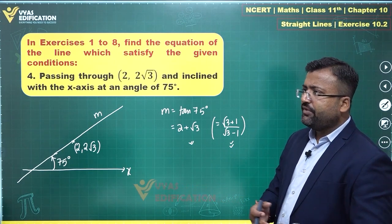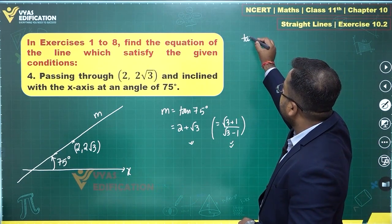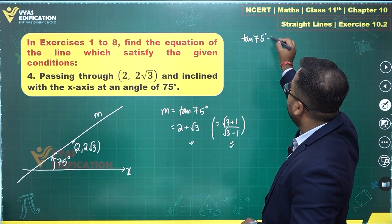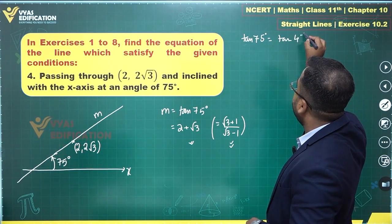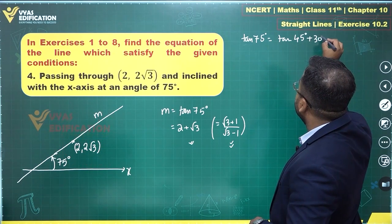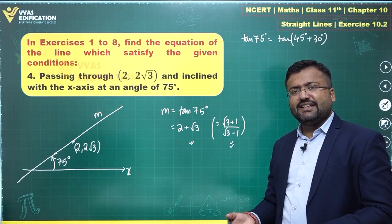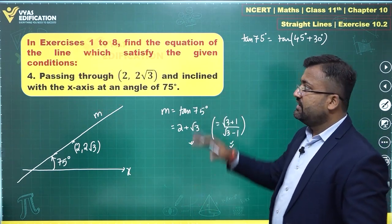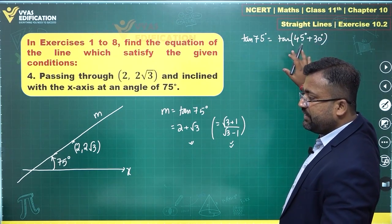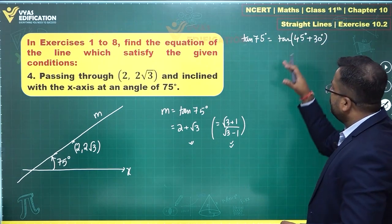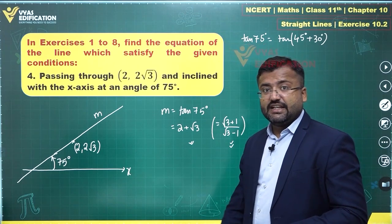But this is something which you should remember. Okay, in case you don't remember, how can you find tan 75 degree? Now tan 75 degree can be found with the help of writing it as tan 45 degree plus 30 degree as well. This is how you can find this. And you know tan 45 degree, you know tan 30 degree, you can easily find this. This is tan of A plus B, which is tan A plus tan B upon 1 minus tan A tan B. Using that you can find tan 75 degree easily.